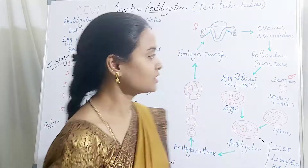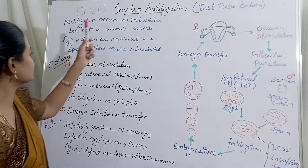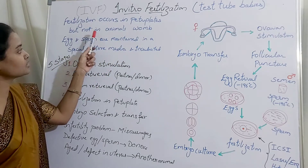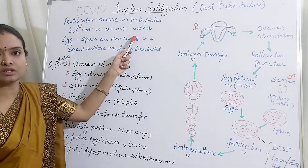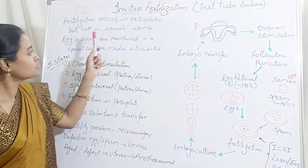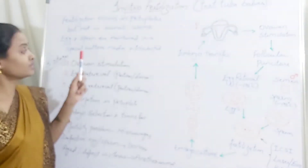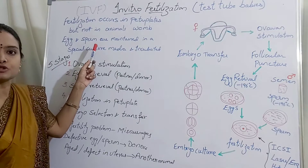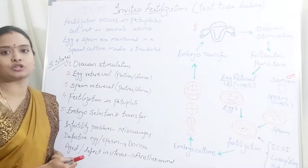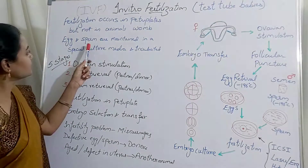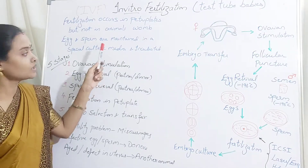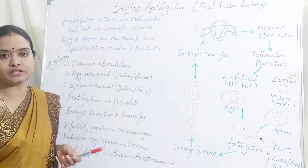Naturally fertilization occurs inside the body, but here you can see fertilization occurs in petri plates, not in the animal womb. The female animal is not directly involved. The egg and the sperm cells are extracted and they are maintained in a culture media, where the special media will allow the cells to be live and remain in active condition.